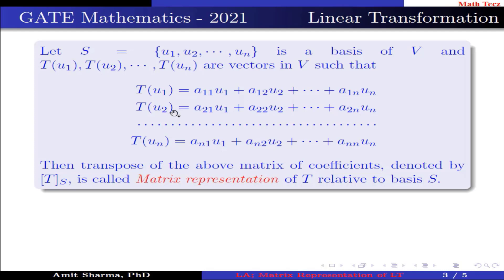T(u₂) = a₂₁u₁ + a₂₂u₂ + ... + a₂ₙuₙ, and so on. Then transpose of the above matrix of coefficients, denoted by [T]ₛ, is called matrix representation of T relative to the basis S.